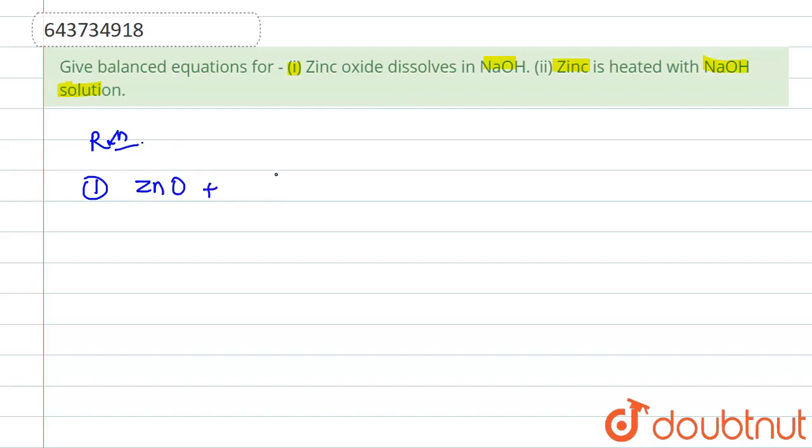we have 2NaOH. We are balancing this simultaneously. This will give Na2ZnO2, this is sodium zincate